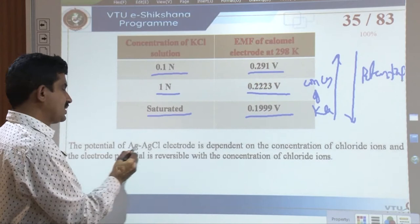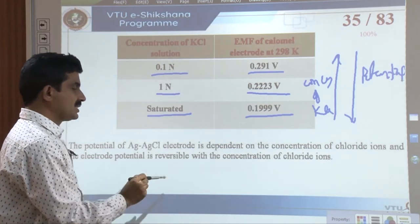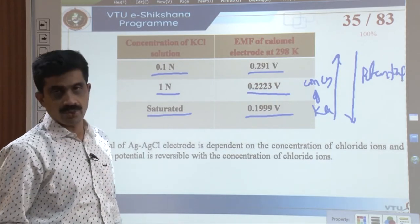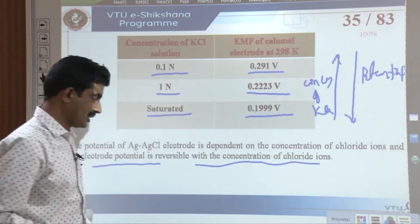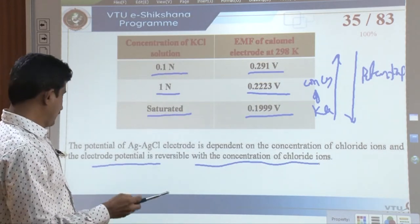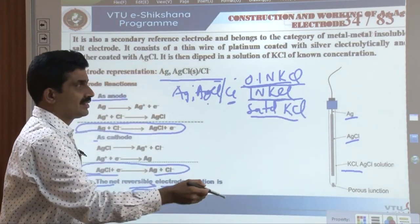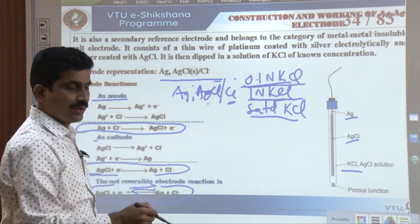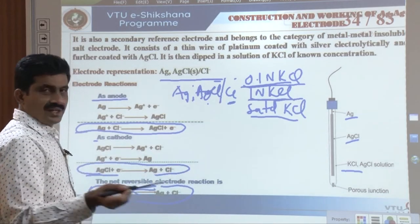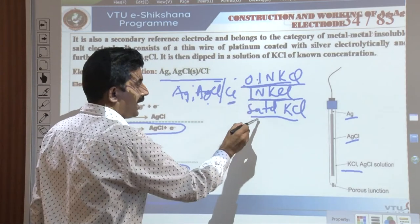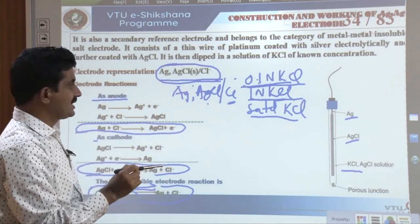The potential of the Ag-AgCl electrode is reversible with the concentration of chloride ions. The silver-silver chloride electrode consists of a thin wire of silver, coated electrolytically with silver and then silver chloride, dipped in a solution of KCl of known concentration. Three concentrations of KCl can be used: 0.1 normal, 1 normal, and saturated. The electrode is represented as Ag | AgCl | Cl⁻.